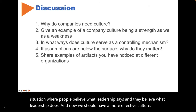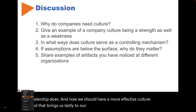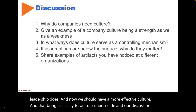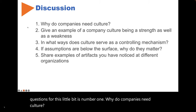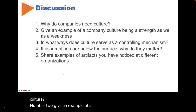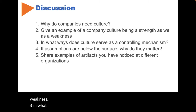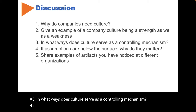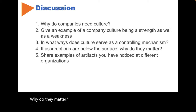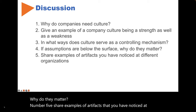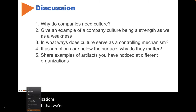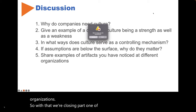That brings us to our discussion questions. Number one: why do companies need culture? Number two: give an example of a company culture being a strength as well as a weakness. Number three: in what ways does culture serve as a controlling mechanism? Number four: if assumptions are below the surface, why do they matter? Number five: share examples of artifacts that you have noticed at different organizations. With that, we're closing part one of organizational culture, chapter eight — go ahead and answer these questions, and you can head over to the discussion board.